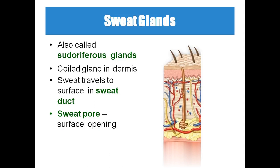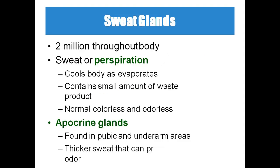Sweat glands are exocrine glands, also called duct glands, which release their secretions outside the blood. We have about 2 million sweat glands throughout our body, which produce sweat — also called perspiration — usually to cool the body. Special sweat glands present in the underarms and near the pubic area are called apocrine glands; there the sweat is thicker.